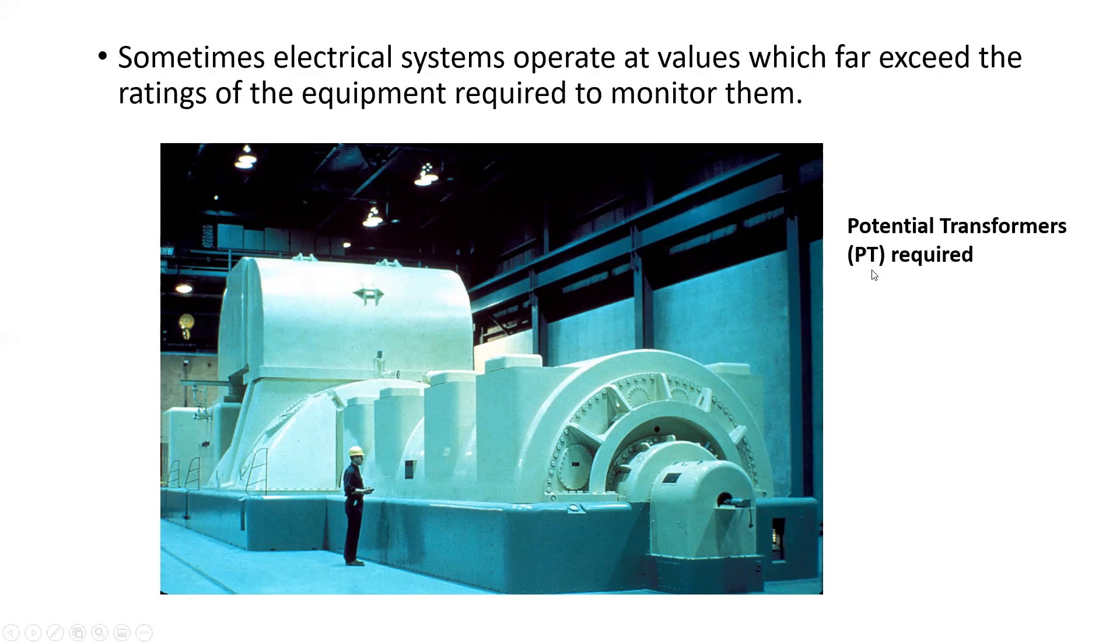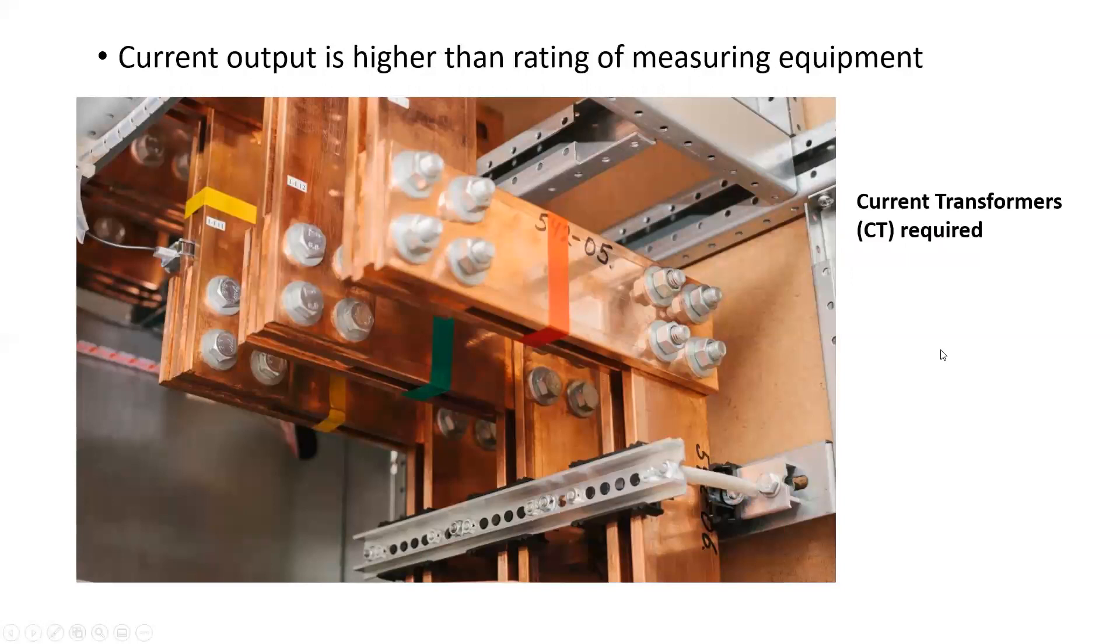And so for that application, we'll use potential transformers or PTs. The other application that we're going to have that requires instrument transformers is when the current value or the current output is higher than the rating of the measuring equipment. When we have current values that exceed the rating of the ammeter, we need to then use an instrument transformer so that we can bump that current down to a value that my meter can actually measure. So these are known as current transformers or CTs.